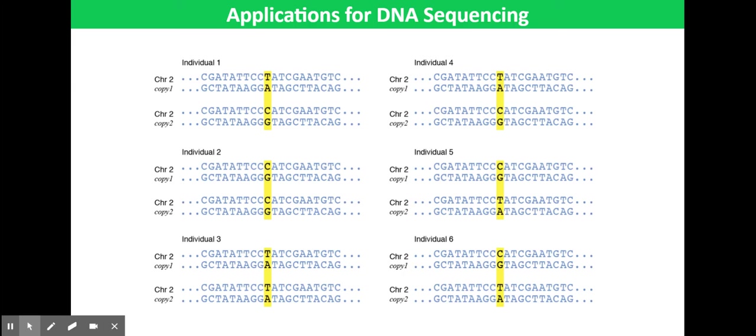The places on the DNA where these substitutions occur are called single nucleotide polymorphisms or SNPs, pronounced SNPs.